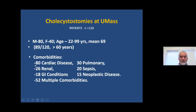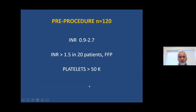In our patients, 80 had cardiac disease, 30 had pulmonary disease, 26 had renal disease, 20 had overwhelming sepsis — although all had some element of sepsis — 18 had GI conditions, and out of 120, nearly half had multiple comorbidities for which cholecystostomy was performed.